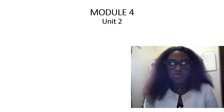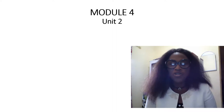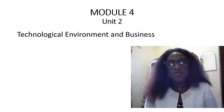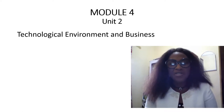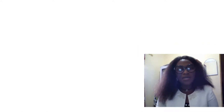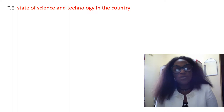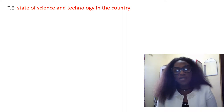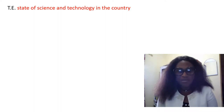Let's look at Module 4, Unit 2 of GST 204. It has to do with technological environment and business. When we are talking about technological environments, we are looking at the state of science and technology in the country where the entrepreneur wants to do his business.